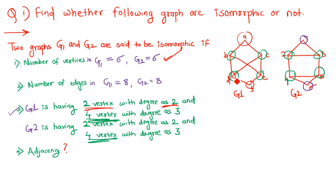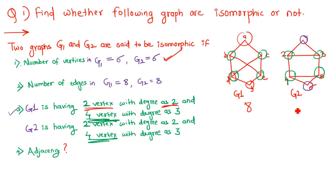The second condition is that the number of edges in both graphs should be the same. Counting the edges in the first graph, we get 8 edges. In the second graph, we also have 8 edges. So this condition is also satisfied.